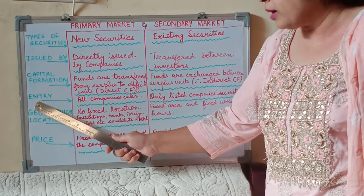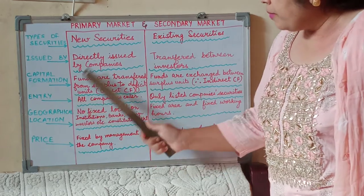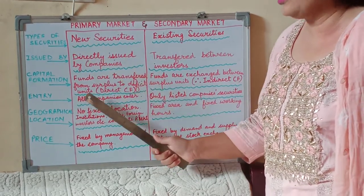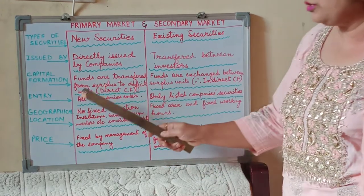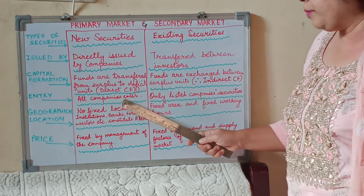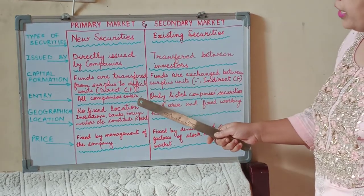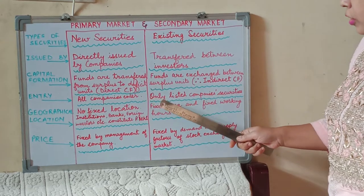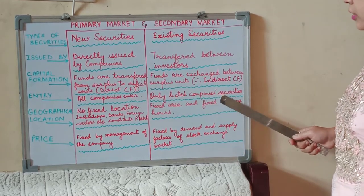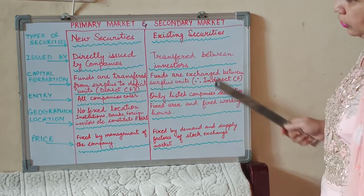Another basis is entry — that is, who enters the primary market and who enters the secondary market. In a primary market, since the securities are launched, floated, and issued for the first time, all companies enter the primary market. On the other hand, since the securities have already been floated and reached the listing stage, only listed companies' securities are entered in the secondary market or the stock exchanges.